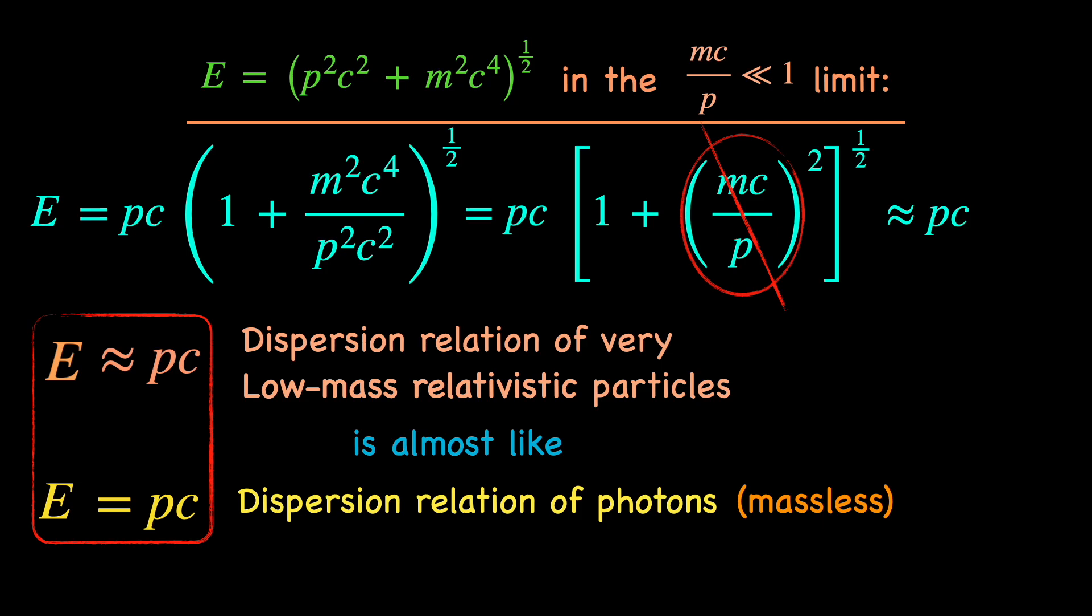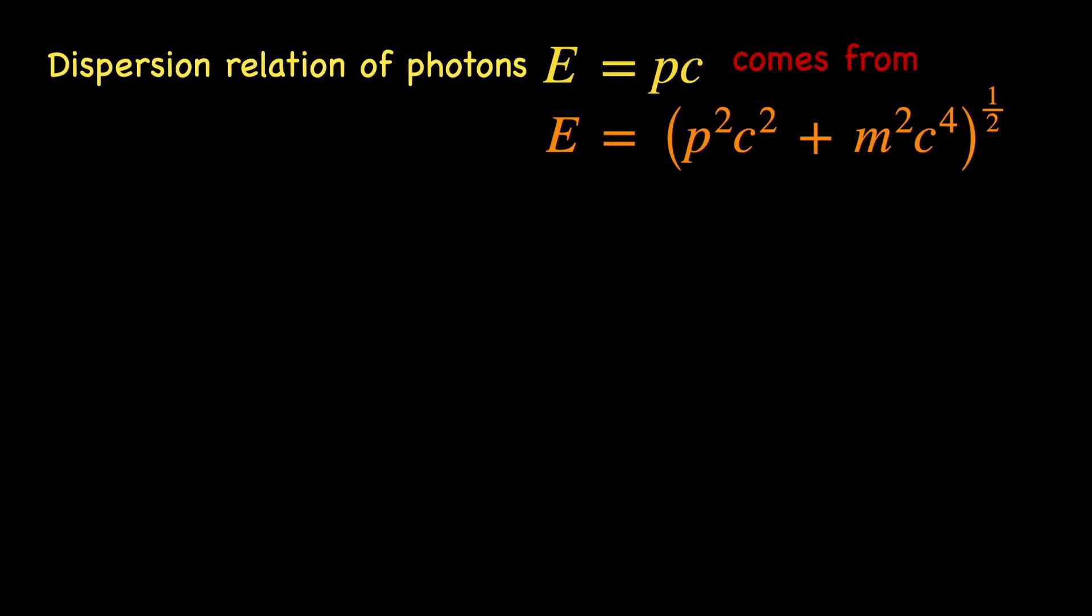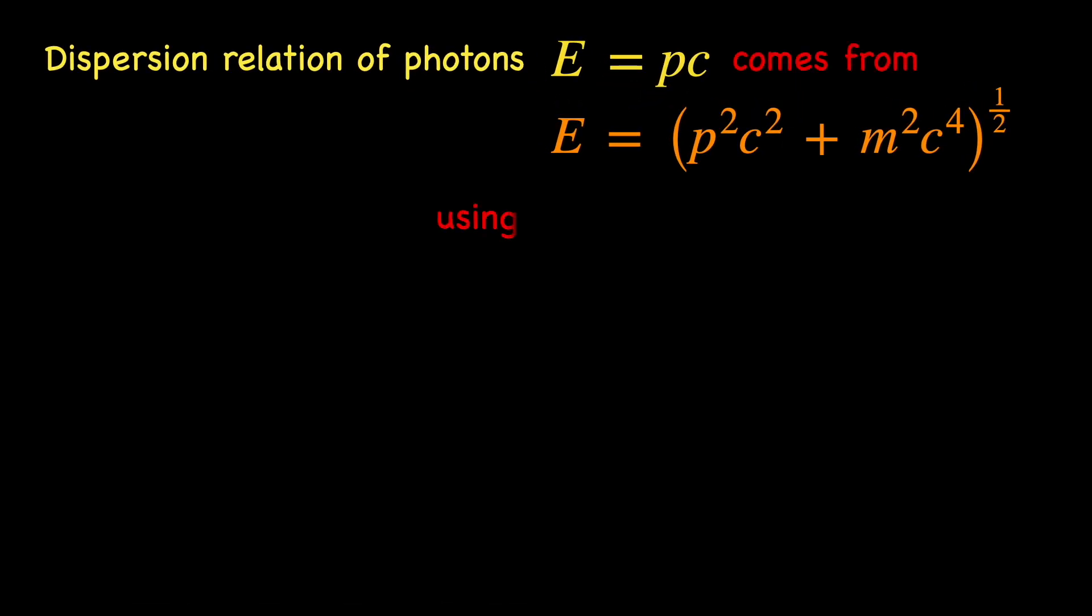The misuse is to turn this around and claim that the massless dispersion relation of photons can be obtained from the massive ones by putting m equals 0. Unfortunately, you will see this done in almost every textbook on modern physics and relativity.